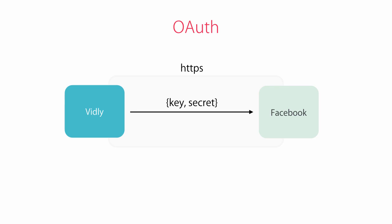The user can authorize Vidly to access this information. Since we registered Vidly with Facebook at the beginning, Facebook knows the address of Vidly. So it will redirect Joe back to Vidly, and it will also pass an authorization token. This authorization token tells Vidly that Facebook could successfully authenticate this user.